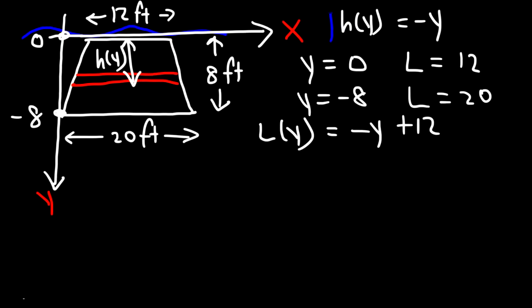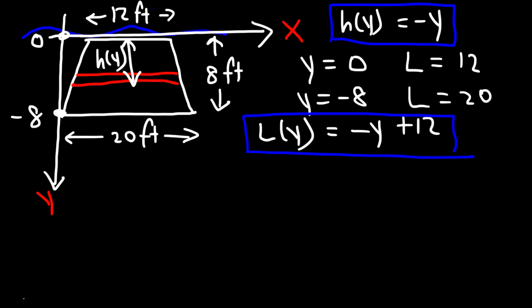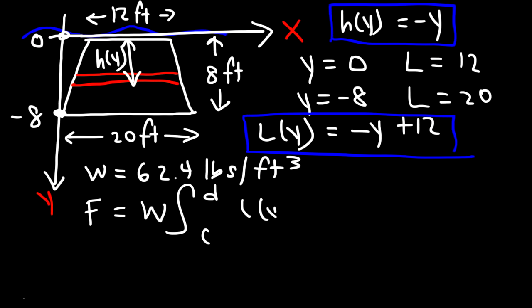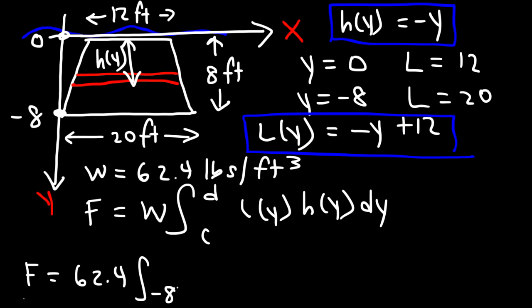We have h(y) and l(y). Since the units are in feet, we use the weight density of 62.4 pounds per cubic foot. The fluid force formula gives: 62.4 times the integral from negative 8 to 0 of (negative y plus 12) times (negative y) dy.